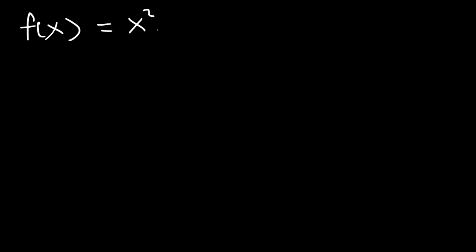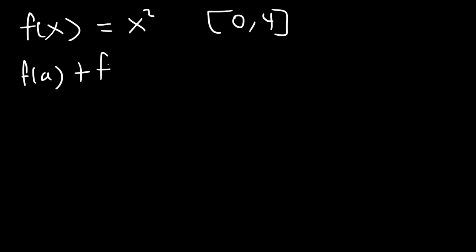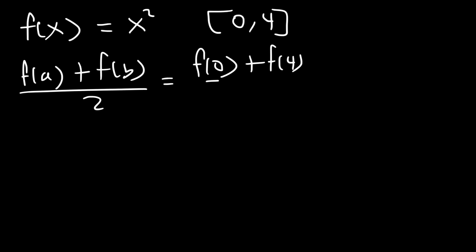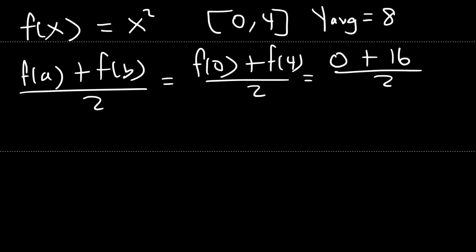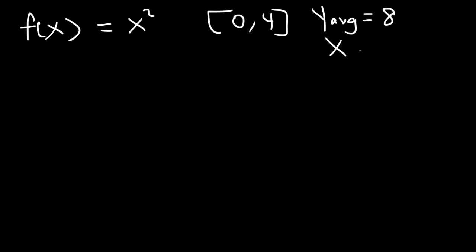Let's try another problem. What if we don't have a linear function? Say f of x equals x squared from 0 to 4. Let's see how the average value of the function compares to the average of f of a and f of b. That's f of 0 plus f of 4 over 2. When x is 0, y is 0. When x is 4, 4 squared is 16. So 16 divided by 2 is 8, giving an average y value of 8. The average x value, or midpoint, is 2.